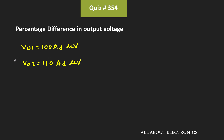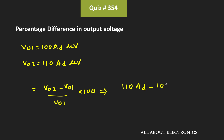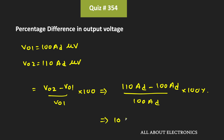The percentage difference in the output voltage is (V02 - V01) / V01 × 100 = (110·Ad - 100·Ad) / (100·Ad) × 100. Since Ad cancels out, this equals 10/100 × 100 = 10%. The percentage difference in the output voltage is equal to 10%.